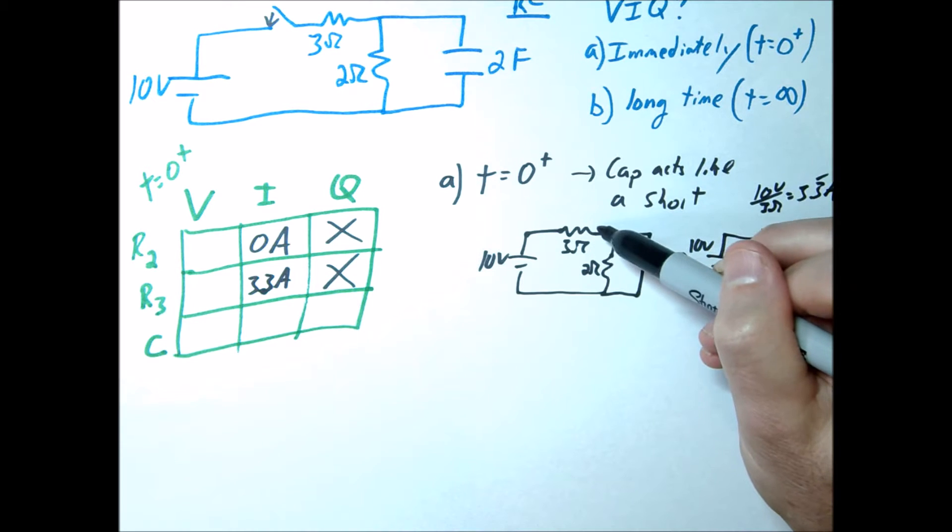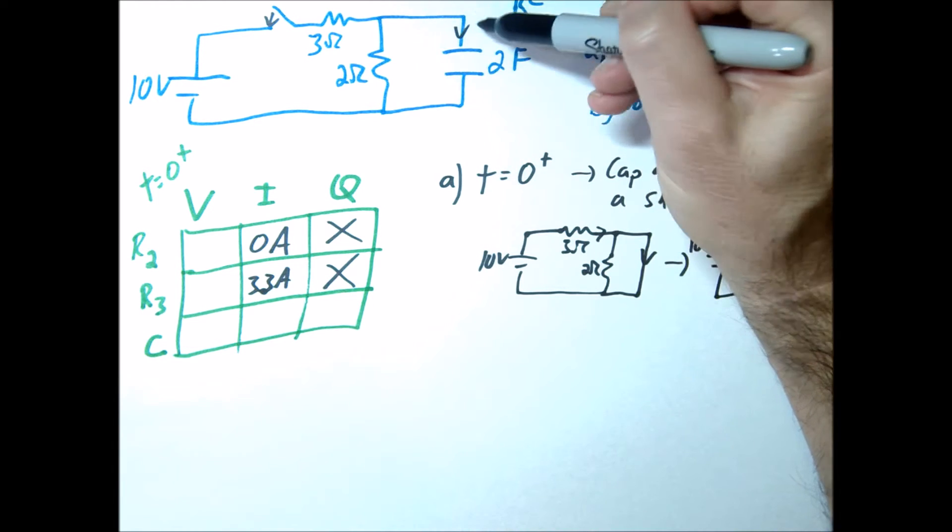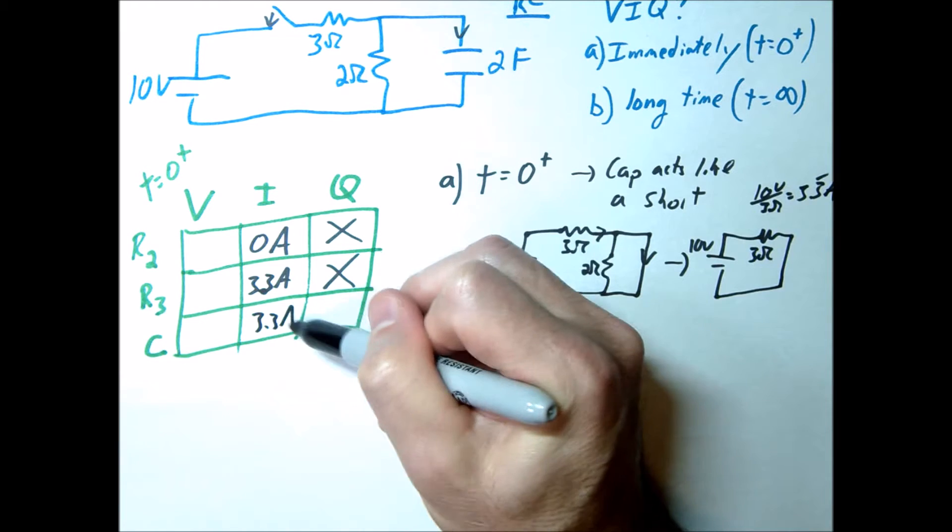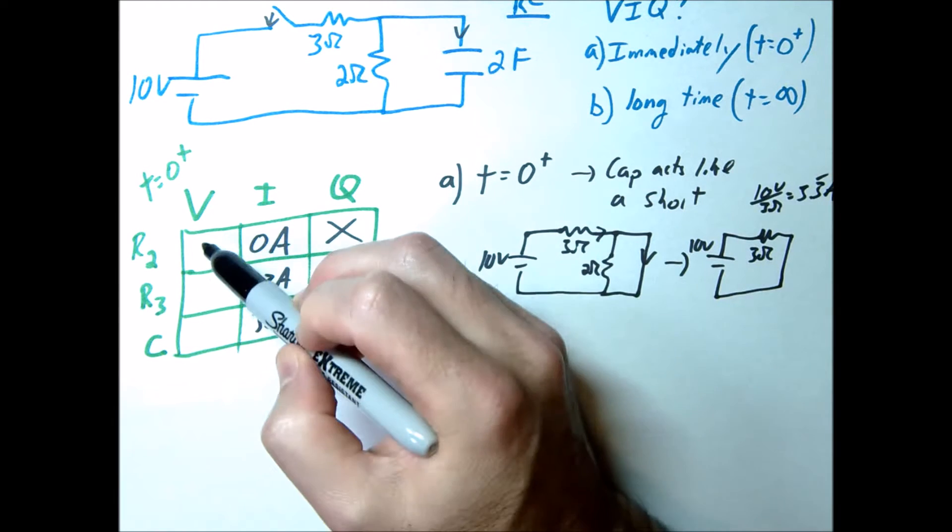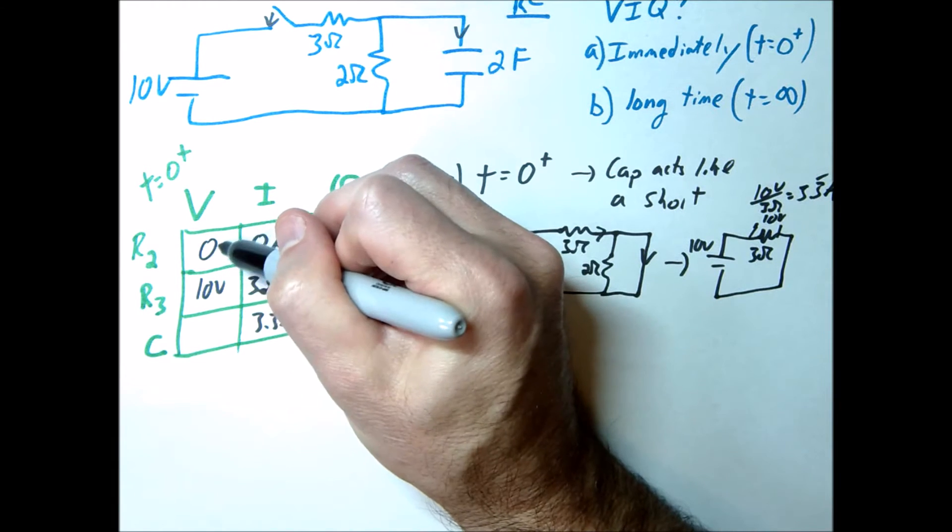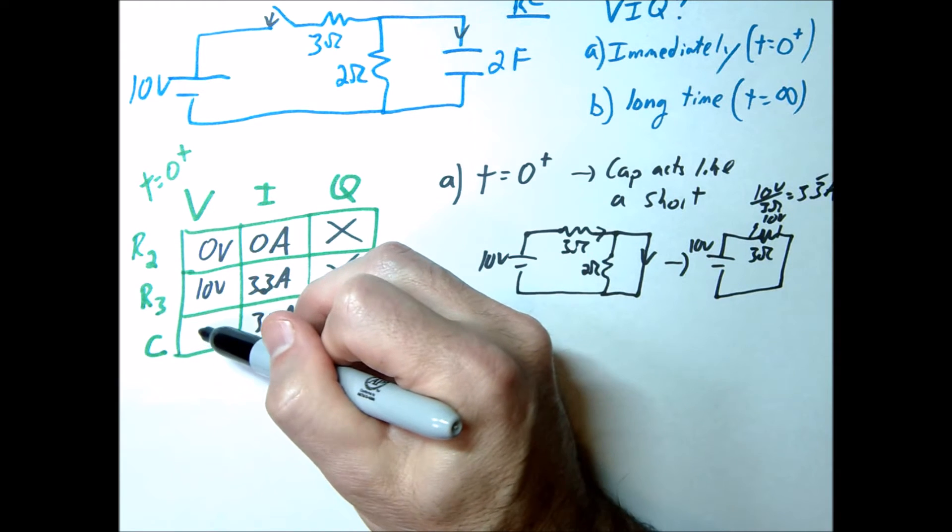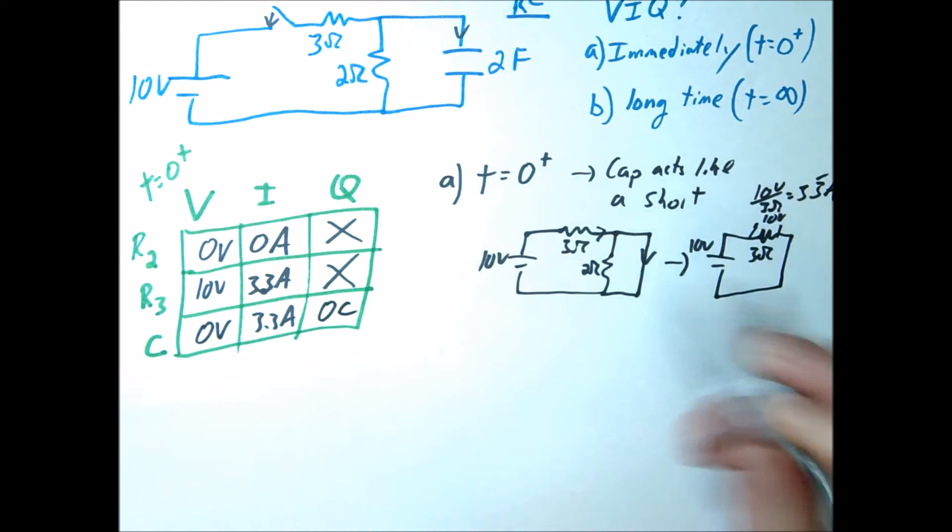Now notice there's 3.3 amps going this way. There's also going to be 3.3 amps going through that capacitor, or at least through the branch of the capacitor. The voltage across the 3 ohm is simply going to be 10 volts. The voltage across R2 is going to be 0. There's no current even going through R2, so this voltage is going to be 0. And then the capacitor, same thing. All the current's going through here. There's not going to be a voltage drop across the capacitor at all. So this is going to be 0 volts as well. And so we'd have 0 coulombs across this.